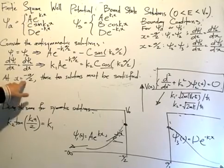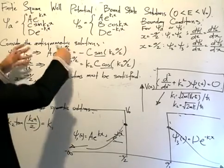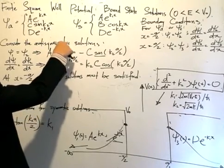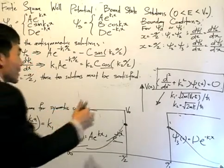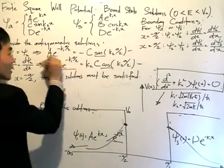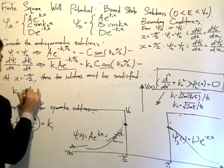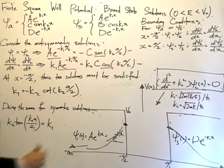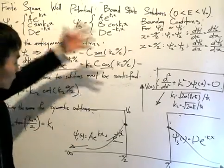At x equals minus a/2, both boundary condition equations must be satisfied. I notice there are common factors A and C, as well as e^(−k1·a/2), so I can divide the two equations together to eliminate the constants A and C. Dividing gives k1 equals k2 times the cotangent of k2·a/2. I divide them in order to eliminate the constants and solve directly for k1 and k2.